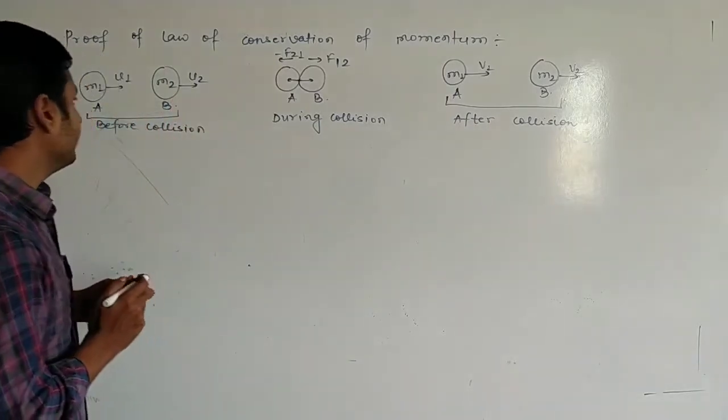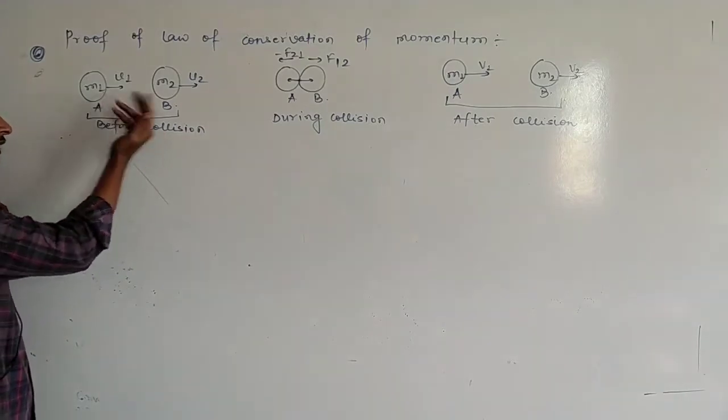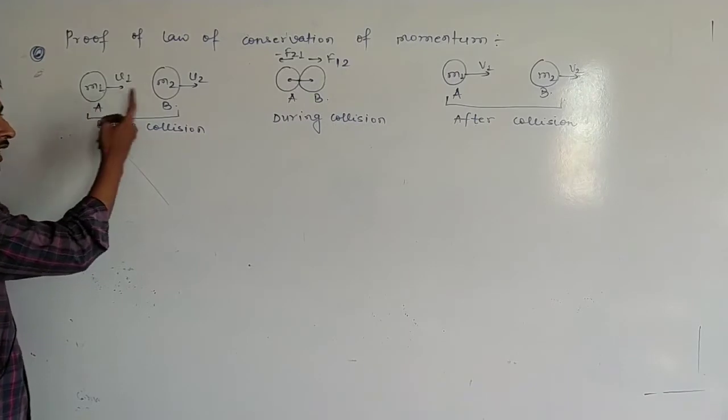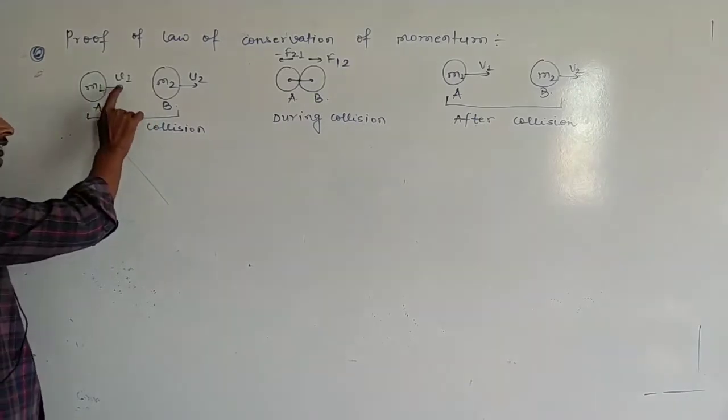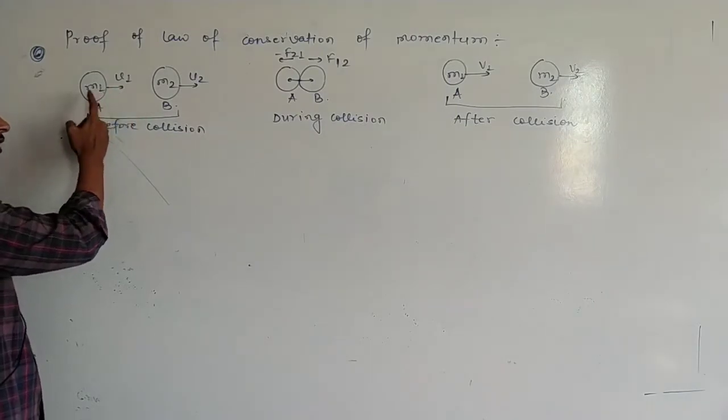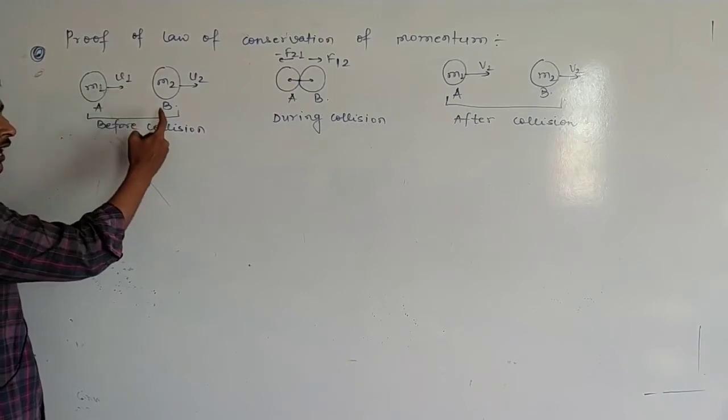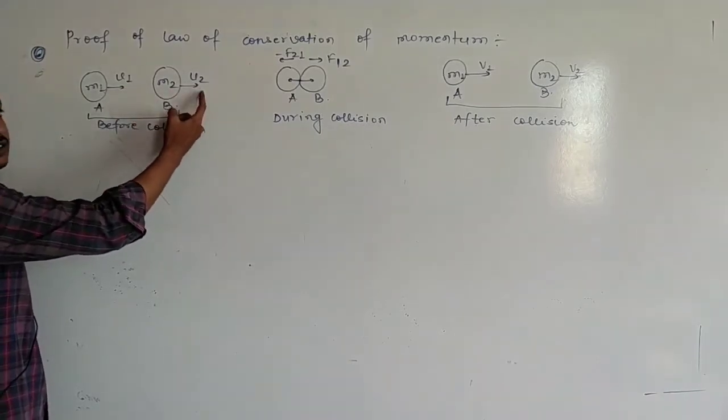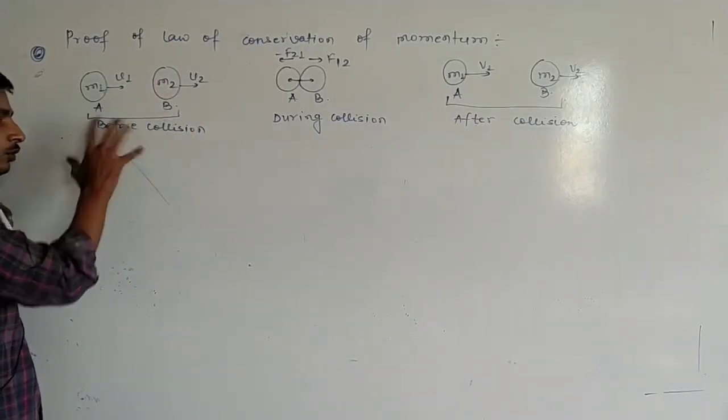Here there are two objects having mass m1 and m2. And the initial velocity of mass m1 is u1, and the initial velocity of m2 is u2. And this condition is before collision.